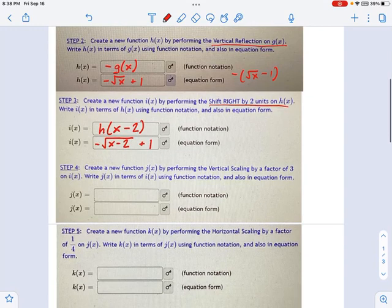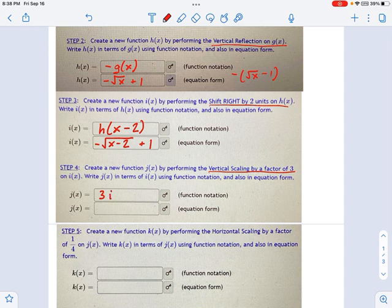Next step. I've got a vertical scaling by a factor of 3. Now if you think about what vertical scalings are, that means multiply by something. So j of x will equal 3 times i of x in function notation. And what that means here, I'll write it over here first, is 3 times the i of x equation.